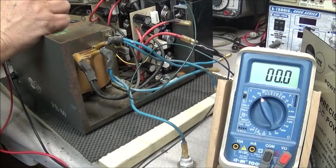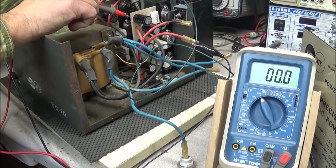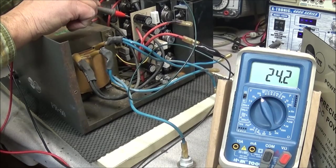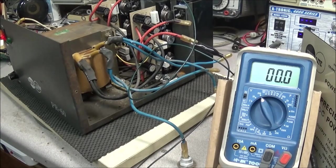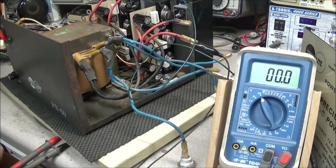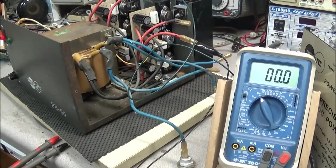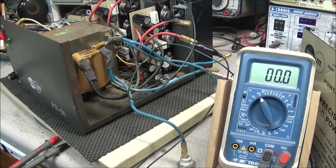We'll do the same to filter board number 2 and we have our 24 volts. So that's all it took to straighten out the rectifier unit to get our 24 volts back.